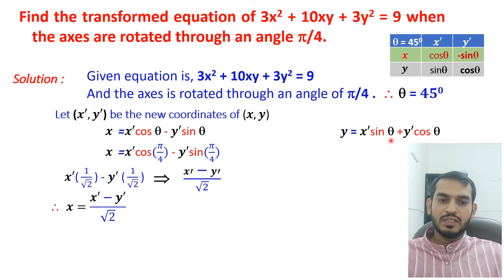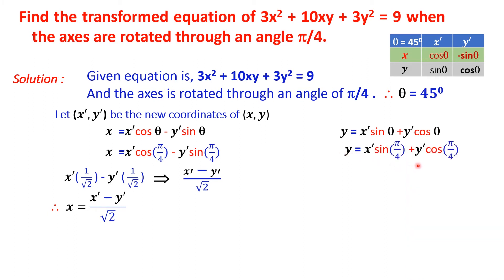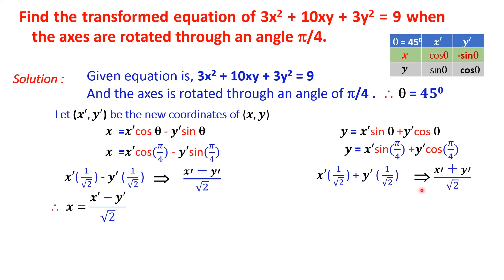Now substituting θ = 45 degrees in the equation for y: y = x'sin(π/4) + y'cos(π/4). Since sin(π/4) and cos(π/4) are both equal to 1/√2, we get y = x'·(1/√2) + y'·(1/√2). Since the denominator is the same, y = (x' + y')/√2.